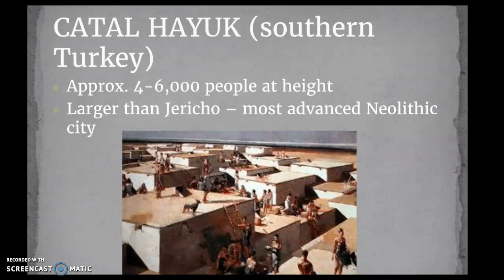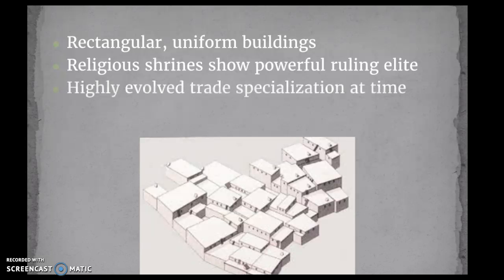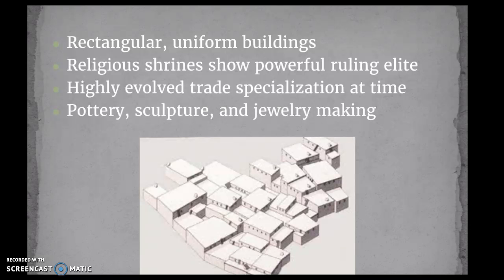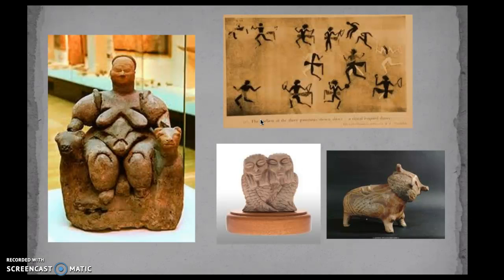The other big city at this time is Çatalhöyük, approximately 4,000 to 6,000 people — larger than Jericho — and considered the most advanced Neolithic city. Some of the differences are that they have rectangular, very uniform buildings, showing evidence of a little more city planning, because they all sort of fit together. There is definitive proof of religious shrines showing a powerful ruling elite, also very highly involved trade specialization, and a lot of pottery, sculpture, and jewelry making. What archaeological remains do exist tell us something about the civilization in terms of power, fertility, and possibly hunting or dancing.